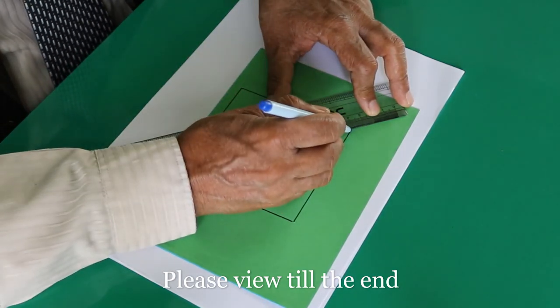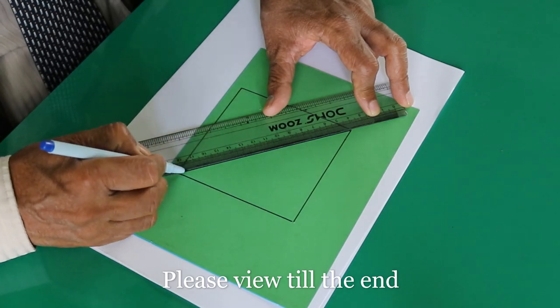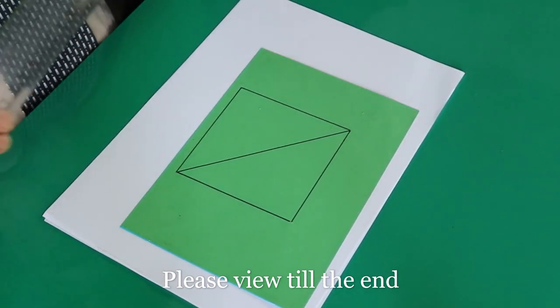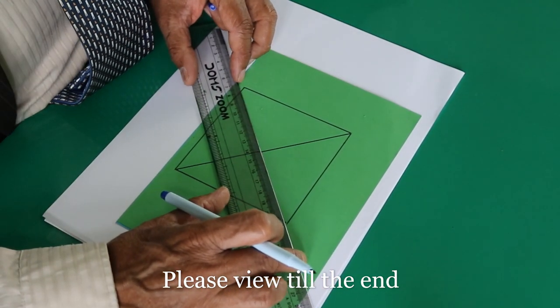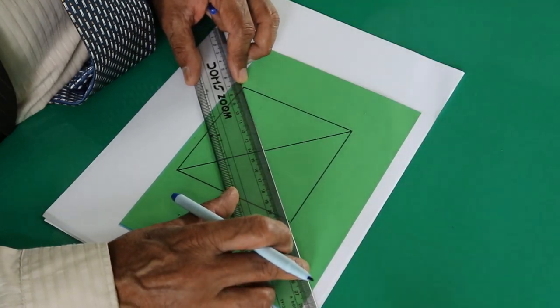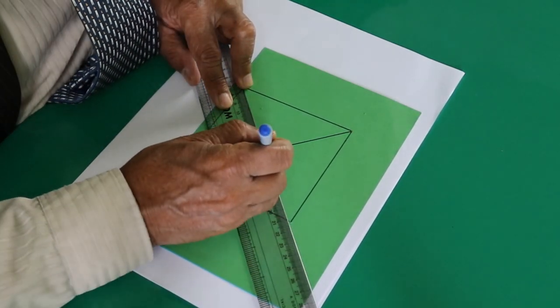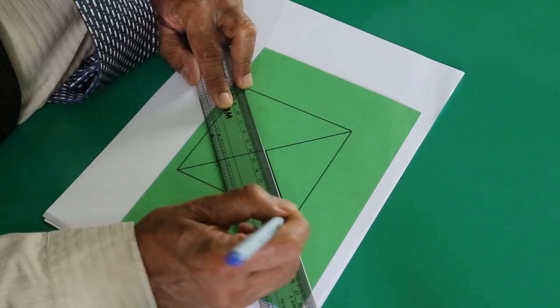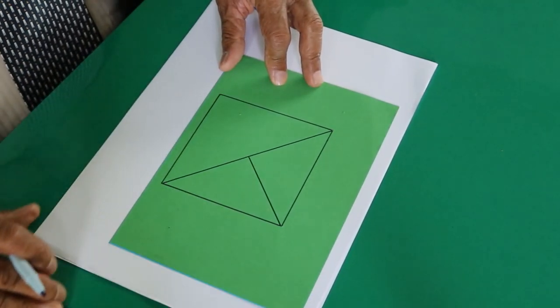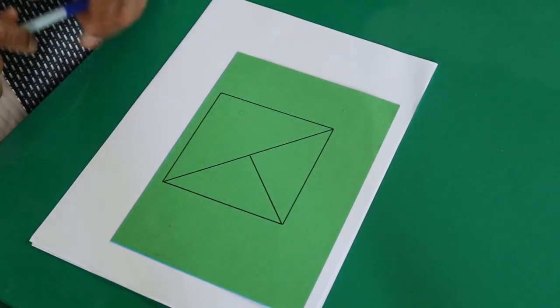So here is one diagonal, and draw another diagonal up to the midpoint of the first diagonal, up to here. Now cut out this shape.